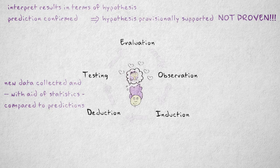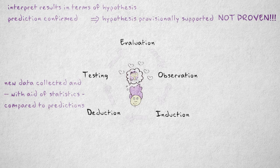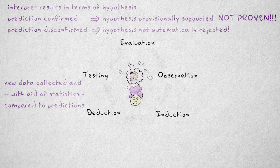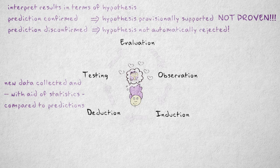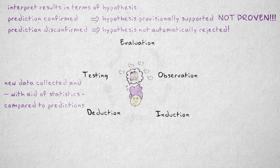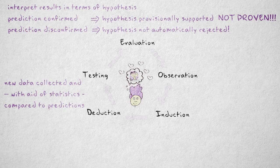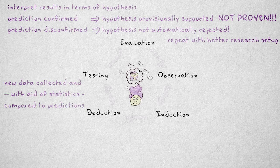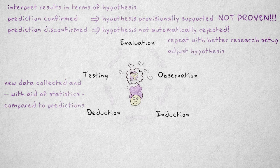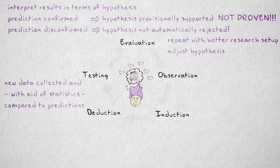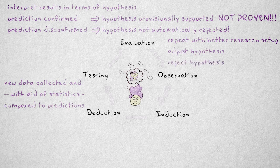In our example, the prediction was actually refuted. This doesn't mean we should reject our hypothesis outright. In many cases, there are plausible explanations for our failure to confirm. If these explanations have to do with the research setup, the hypothesis is preserved and investigated again with a better research design. In other cases, the hypothesis is adjusted based on the results. The hypothesis is rejected and discarded only in very rare cases.